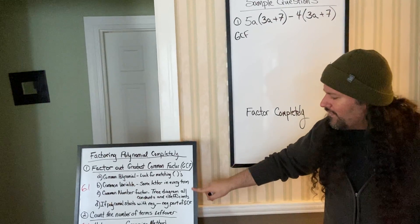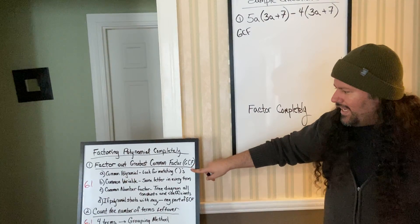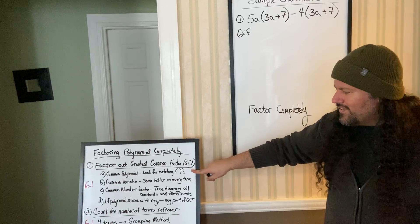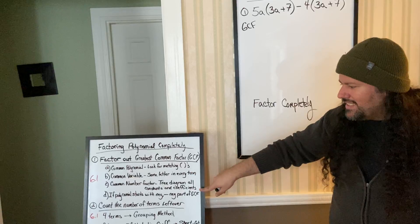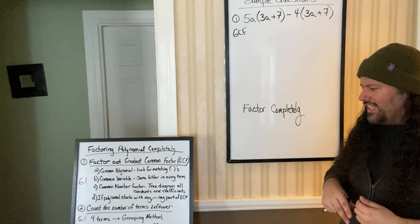GCF, remember, has four steps. A: look for a common polynomial. B: common variable. C: common number factor. And D: does the polynomial start with a negative sign?